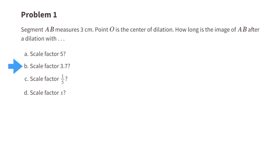Part b: How long is the image of AB after a dilation with a scale factor of 3 and 7 tenths? 3 centimeters times 3.7 equals 11.1 centimeters. So the image of AB after a dilation of 3.7 would be 11.1 centimeters.